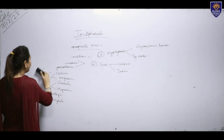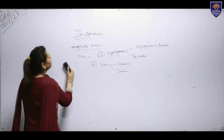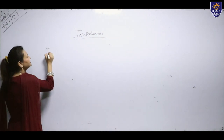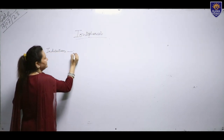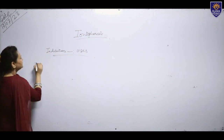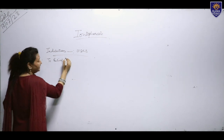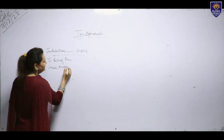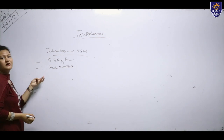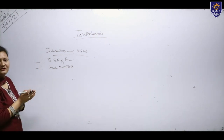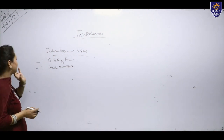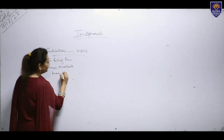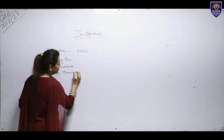Now let us look at the indications for iontophoresis — indications meaning uses. Number one is to relieve pain and for local anesthesia. If we want to introduce a local anesthetic into a certain region or part, we can always go for iontophoresis.